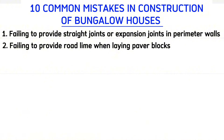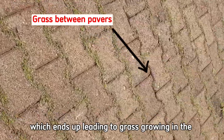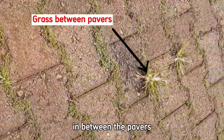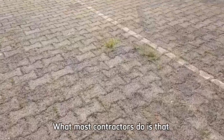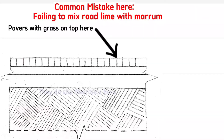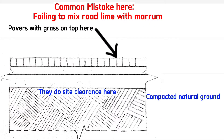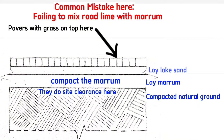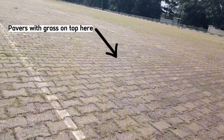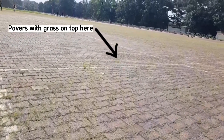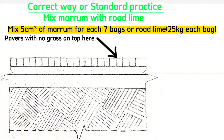Common mistake number two that I see all the time is failing to provide roadlime when laying paver blocks, which ends up leading to grass growing in between the pavers. What most contractors do is that when laying pavers, they do side clearance, compact the ground, lay maram, compact the maram, lay lake sand on top of the maram, and then lay pavers on top. This way, there are high chances that grass will grow in between the paver blocks.